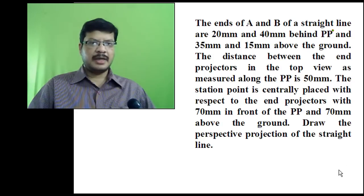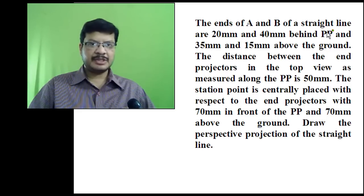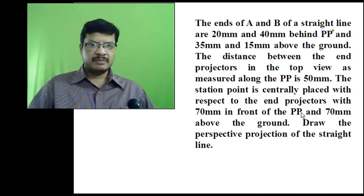In this video tutorial, I will explain how to draw the perspective projection of a straight line. The problem is given like this: the ends A and B of a straight line are 20mm and 40mm behind the picture plane, and 35mm and 15mm above the ground plane. The distance between the end projectors in the top view as measured along the picture plane is 50mm. The station point is centrally placed with respect to the end projectors, with 70mm in front of the picture plane and 70mm above the ground plane. Draw the perspective projection of a straight line.